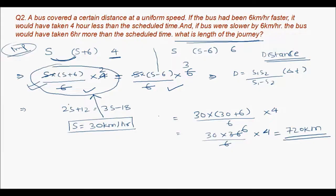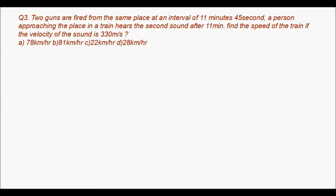Question number 3 — this is an SSC question: two guns are fired from the same place at an interval of 11 minutes 45 seconds. A person approaching the place in a train hears the second sound after 11 minutes. Find the speed of the train if the velocity of sound is 330 m/s. Suppose guns were fired at 9:00 am, then the second is fired at 9:11:45 am.